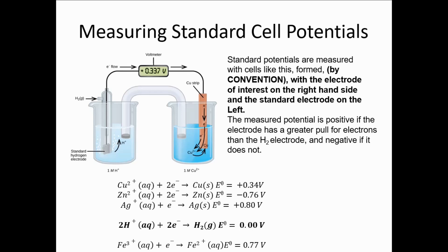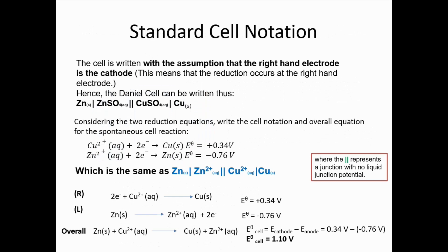The E cell is calculated as E cathode minus E anode. The cell is written with the assumption that the right-hand electrode is the cathode — that is the convention. Left-hand electrode is the anode. We can also write a shorthand notation. For the Daniell cell, for example, the anode is solid zinc and the anodic electrolyte is zinc sulfate solution, while the cathode is solid copper metal and the cathodic electrolyte is copper sulfate solution.